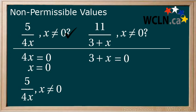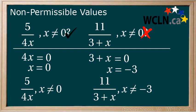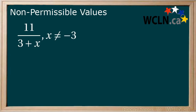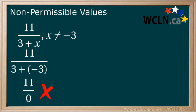Now, 11 over 3 plus x. We take the denominator and make it equal to 0 and solve. Subtract 3 from both sides and we have x equals negative 3. This gives us 11 over 3 plus x, where x cannot equal negative 3. Let's substitute negative 3 in for x to see why: 3 plus negative 3 equals 0, which makes the denominator equal to 0, which we can't have.